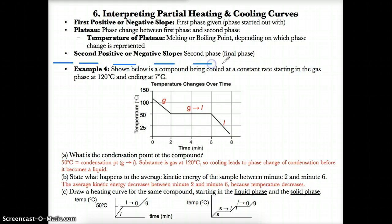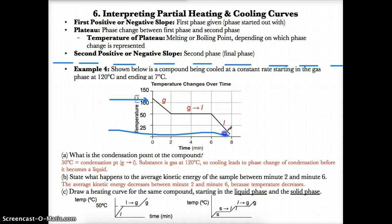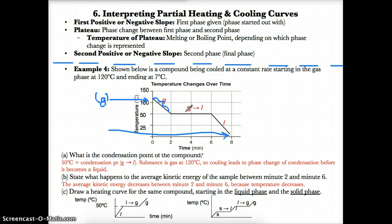Let's try example four. A compound is being cooled at a constant rate starting in the gas phase at 120 degrees Celsius and ending at 7 degrees Celsius. Since you're starting at 120 degrees Celsius and there's only one phase indicated by this negative line, that logically would be a gas. If you're starting as a gas and you have only one phase indicated by this negative slope, obviously it would be a gas.